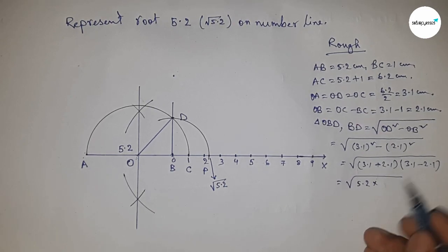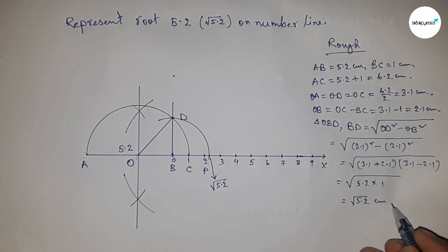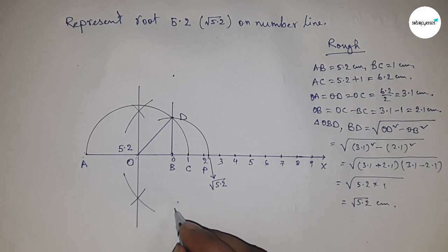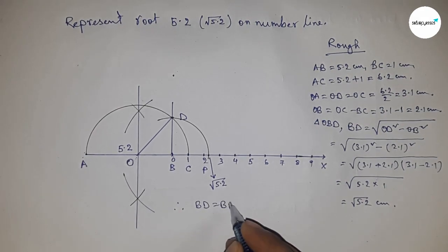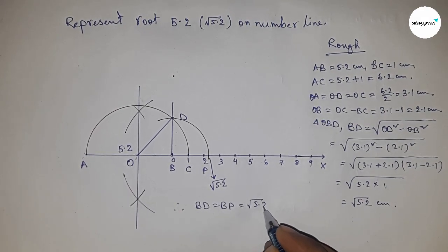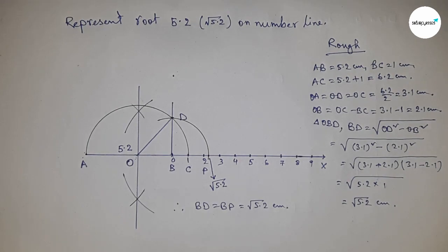Therefore, the lengths BD and BP are equal to √5.2 cm. That's all, thanks for watching. Please subscribe, like, and comment on my video.